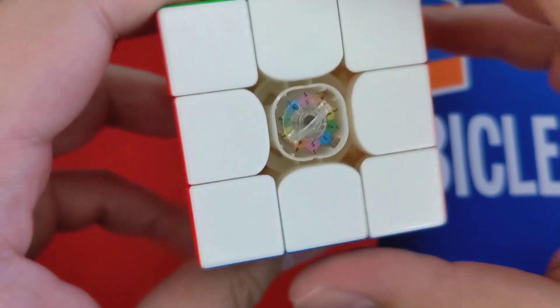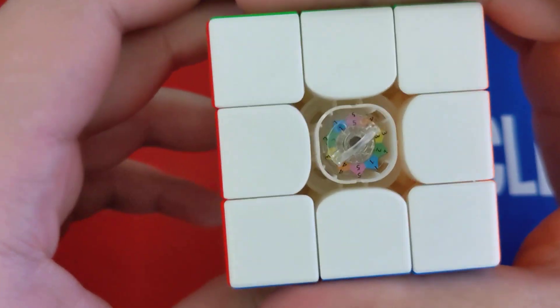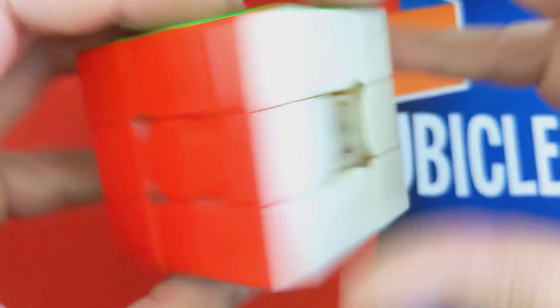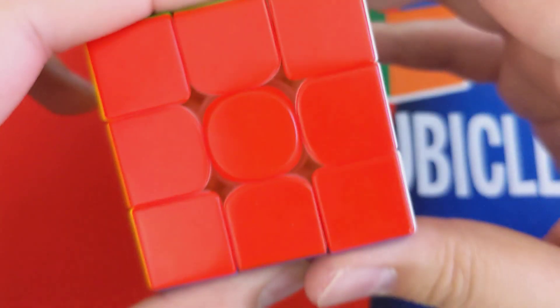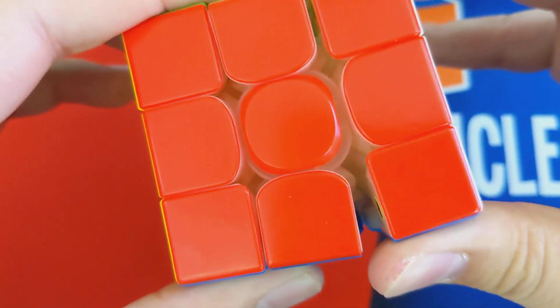So I have this set on compression one, tension five. So this means it's going to be a little bit on the tighter side. So if we set this on five, five, that means it's going to be extremely tight.